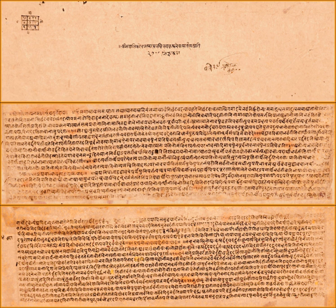Nirukta is a Sanskrit term meaning 'explained' or 'interpreted,' and refers to one of the six ancient Vedangas, or ancillary sciences connected with the Vedas, the scriptures of Hinduism.